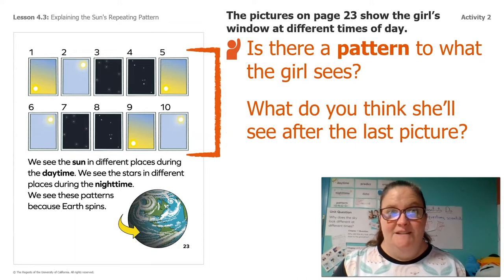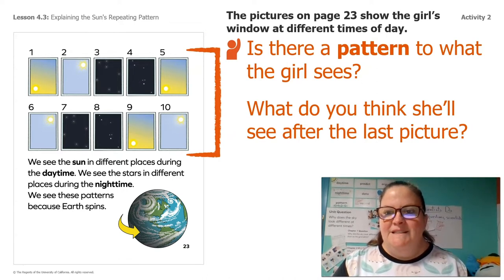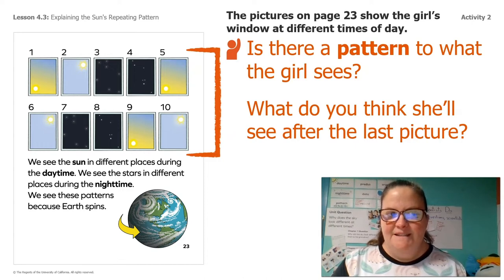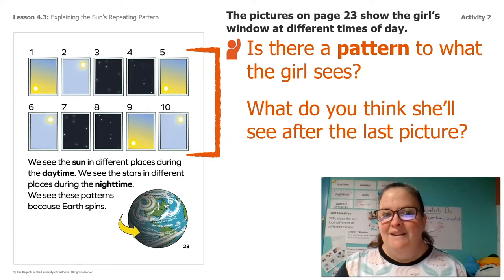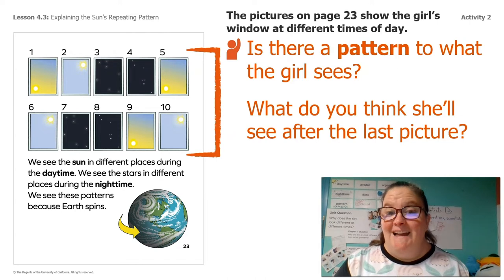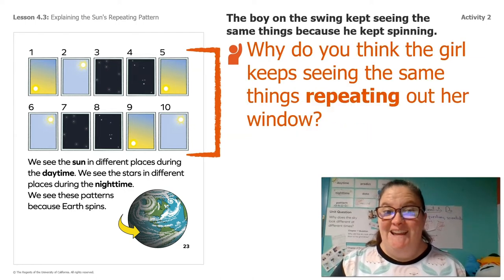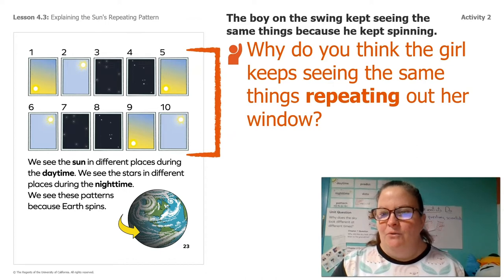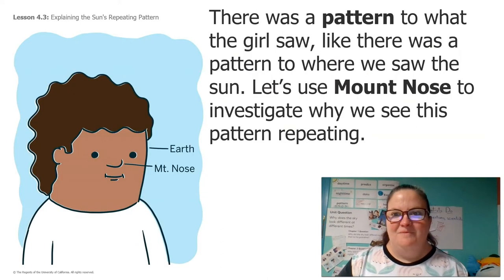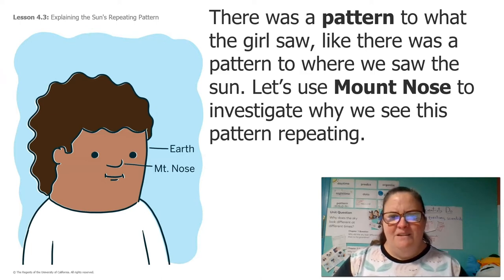Let's take a closer look at this last page. Do you guys see a pattern to what the girl sees? See how they have them numbered — 1, 2, 3, 4, 5, 6, 7, 8, 9, 10. What do you think she's gonna see after that last picture, after picture number 10? I heard some of you say she would see the stars. Why do you think the girl keeps seeing the same things repeating? There was a pattern to what the girl saw, just like there was a pattern to where we saw the sun. Let's do Mount Nose to investigate why we see this pattern repeating.